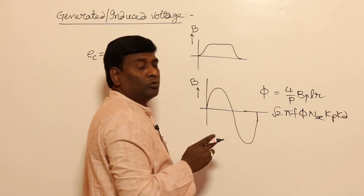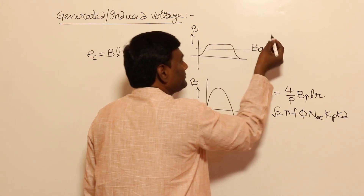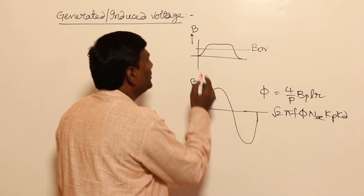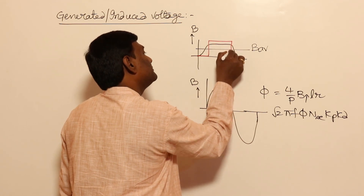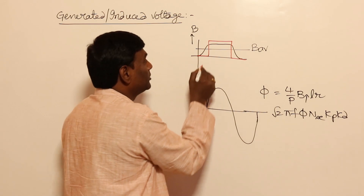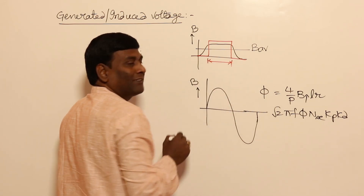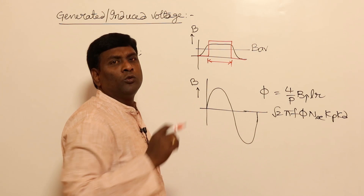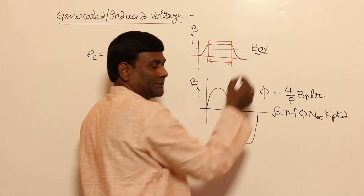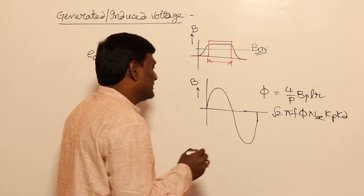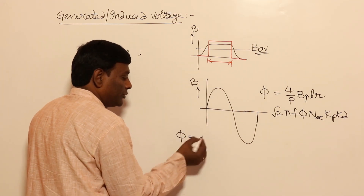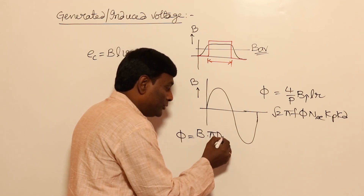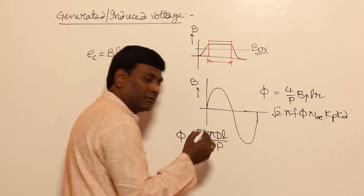Can anybody give an equation for the flat-topped waveform? No. So in the exam, directly they will give B_average. And sometimes they will give the flux density waveform like this also — where under the pole shoe only, flux density can be present, and in the remaining portion, flux density can be zero. In that way also, questions can be given. Anyway, we are going to solve those questions. The point here is: let us think of B_average.